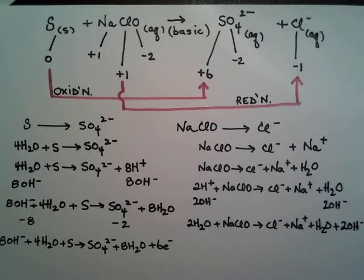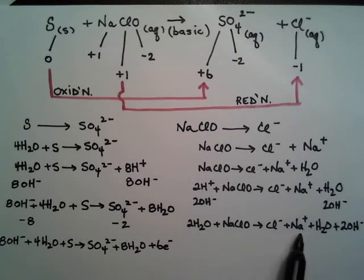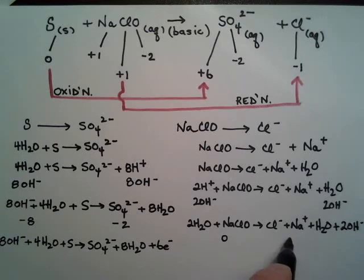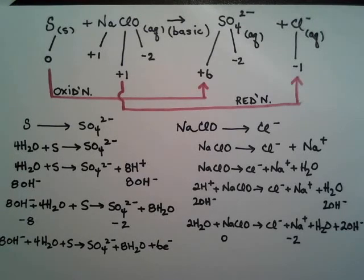Now, balance the charge by using electrons. What do I have? I don't have any charges on the left. Minus one, plus one, minus two. So I don't have anything on here, and I have a minus two over here. So I need two electrons on the left in this reduction.